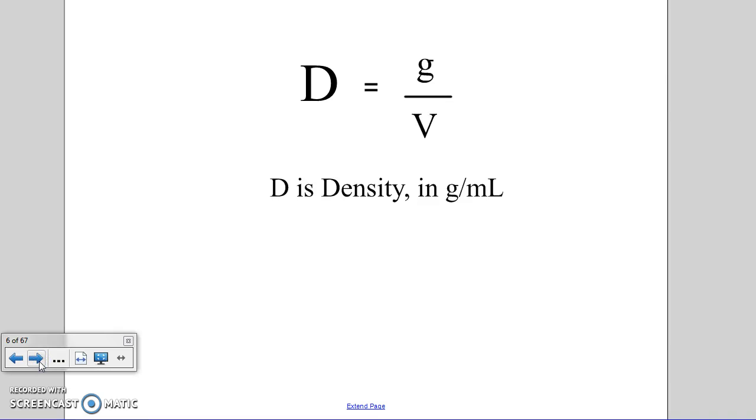For units, D is density in grams per milliliter, g stands for the mass measured in grams most commonly, and V is the volume most often used in milliliters.